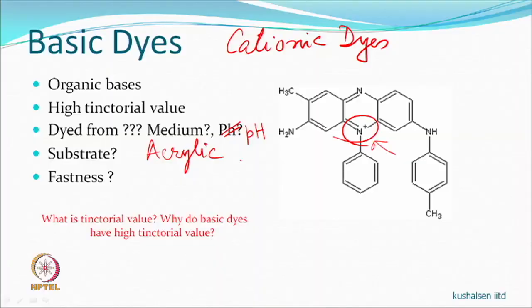Light fastness of cationic dyes on acrylic fibres is also good. Acrylic fibres are hydrophobic with less moisture, but the ionic bond between dye and fibre allows radiation energy absorbed by the chromophore to be transferred to the fibre, keeping the dye safe. It is worth noting why basic dyes have high tinctorial value.